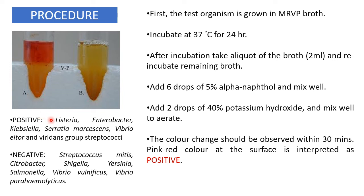VP-positive organisms include Listeria, Enterobacter, Klebsiella, Serratia marcescens, Vibrio alginolyticus, and the viridans group of Streptococci. VP-negative organisms include Streptococcus, Citrobacter, Shigella, Yersinia, Salmonella, Vibrio vulnificus, and Vibrio parahaemolyticus. Try to remember at least two examples from each group for your viva.